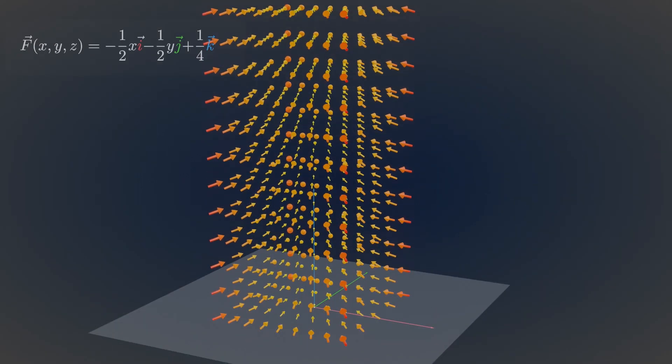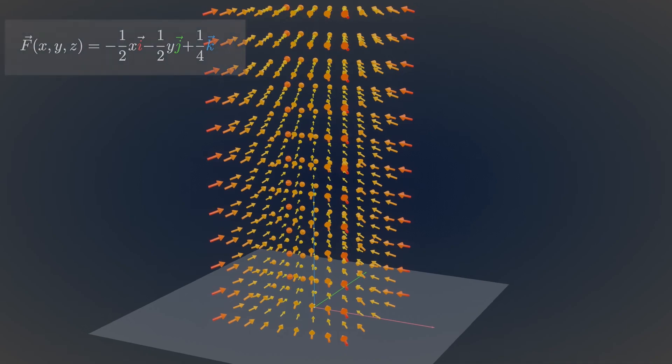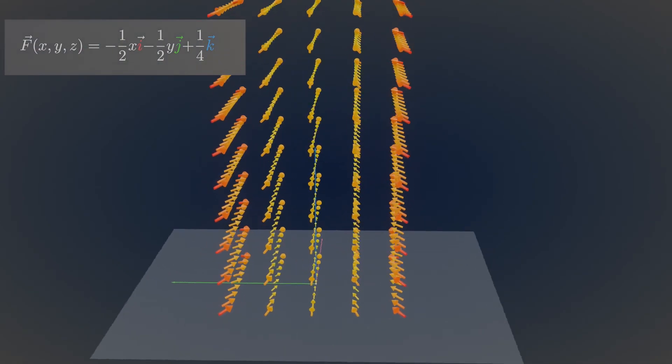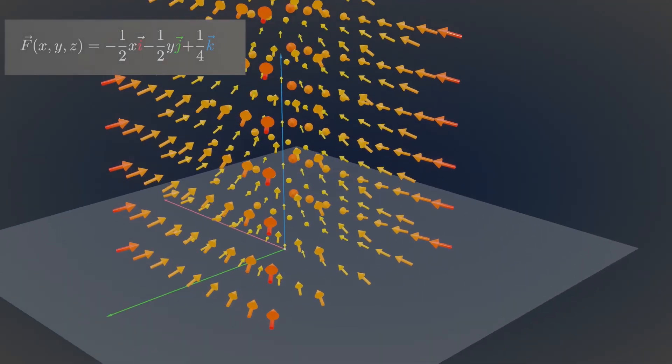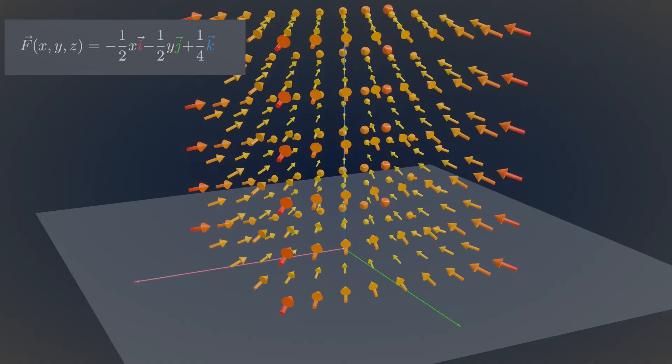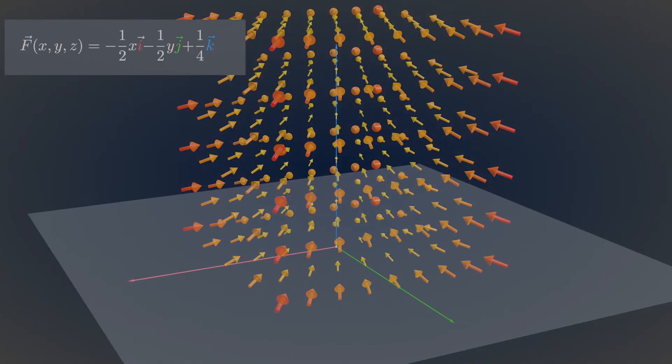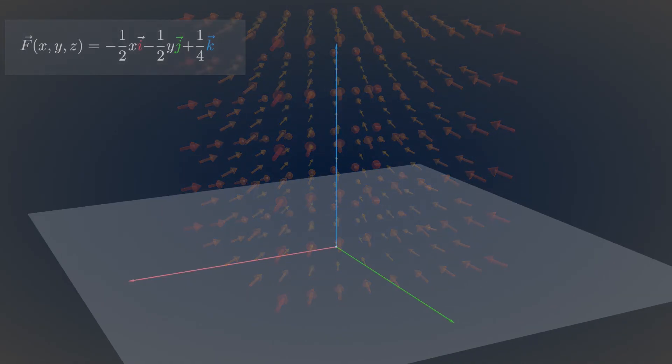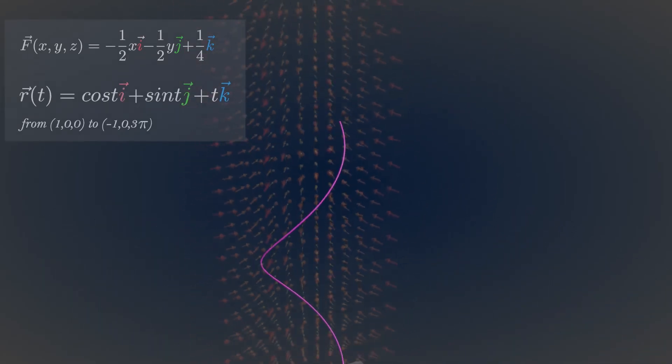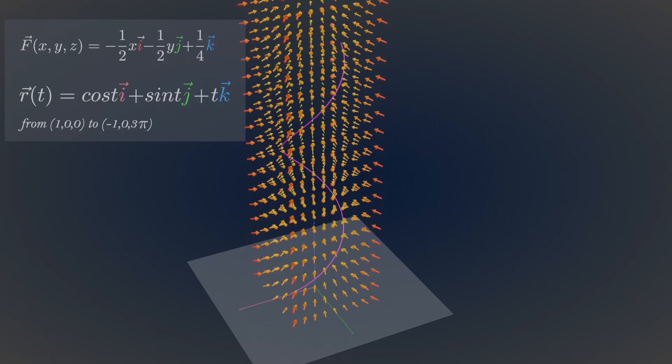Now let's compute line integral of a vector field. I have plotted a force field given by this vector function. Now let's draw a curve parametrized in this force field. These force fields also act on every point on this curve.